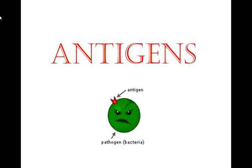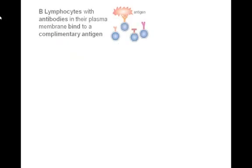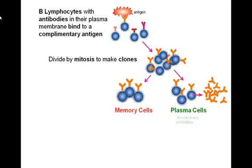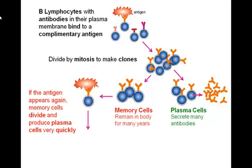And these lymphocytes are stimulated into action when they come across antigens. Yes — invading pathogens are recognised as foreign because they carry antigens that are different from our own. B lymphocytes with antibodies in their plasma membrane bind to a complementary antigen, meaning each B lymphocyte will bind to a different antigen. When the B lymphocyte spots a specific antigen, it divides by mitosis to make many clones. Some of these clones differentiate into plasma cells and memory cells. Plasma cells secrete loads of antibodies specific to the antigen. Memory cells remain in the body for many years; if the antigen appears again, the memory cells divide and produce many plasma cells very quickly, which then make antibodies.